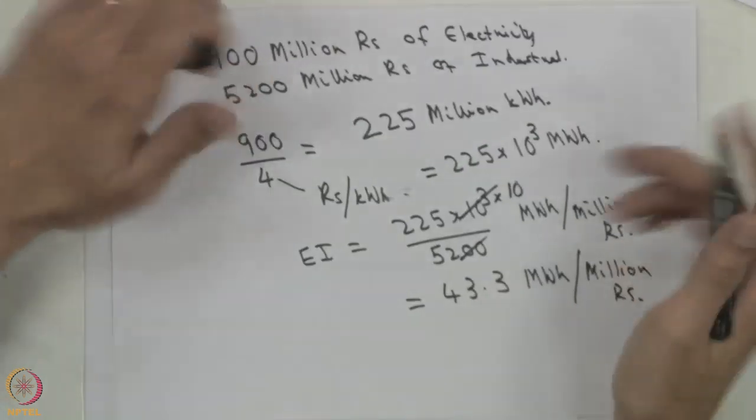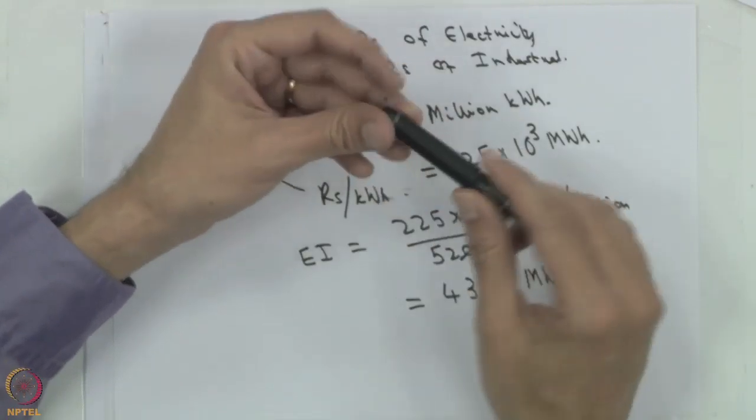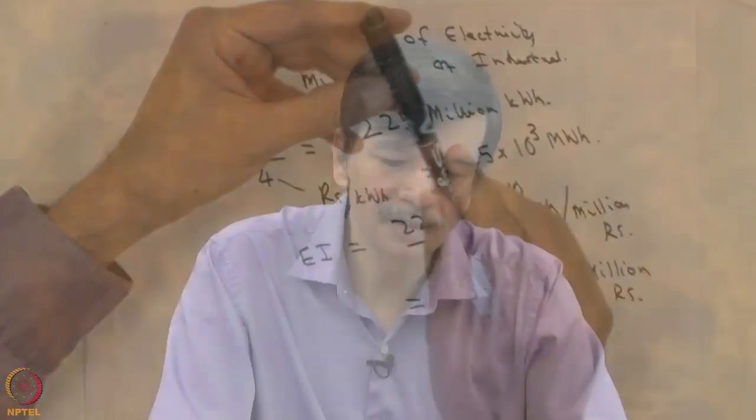The main limitation of input-output analysis is that the relationships are linear and the coefficients are static. As things change over long periods of time, these coefficients would also change, and that is the main limitation.